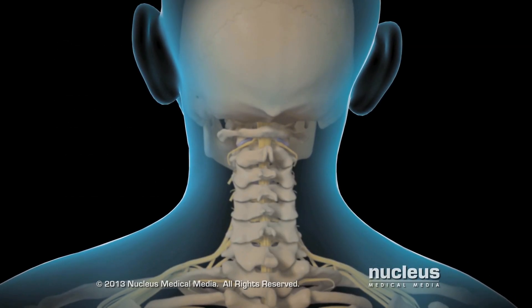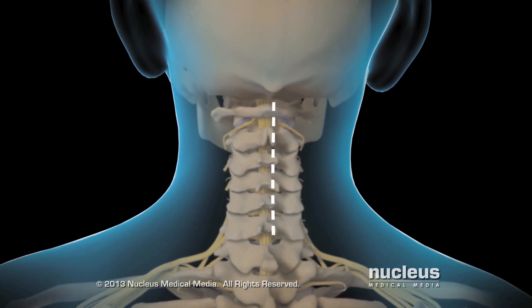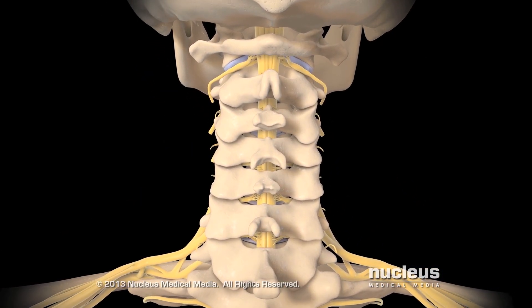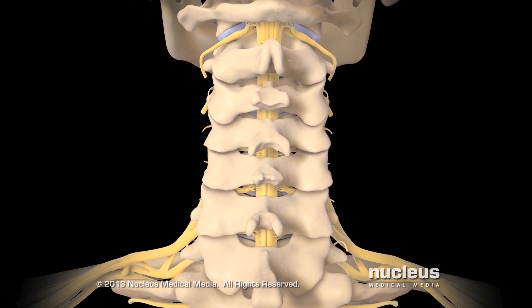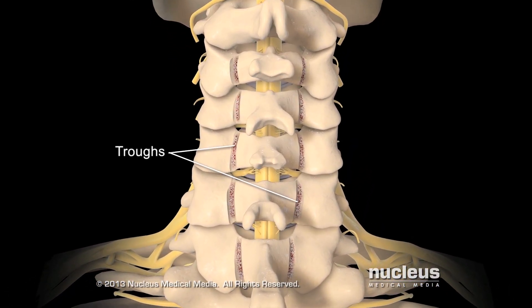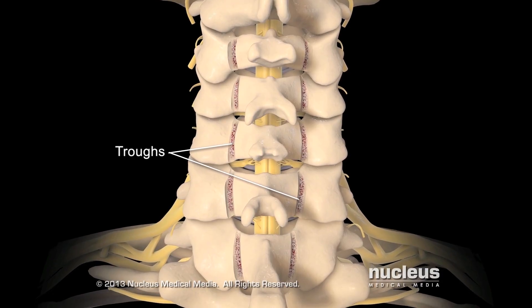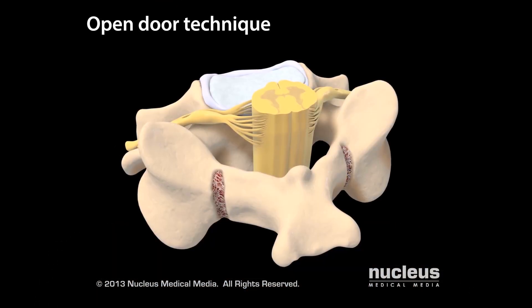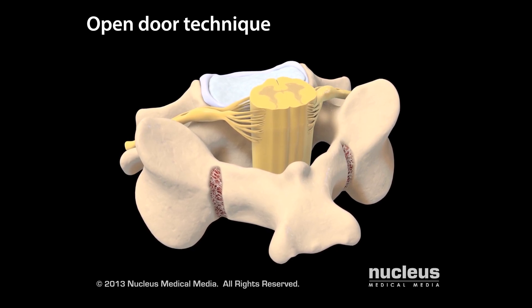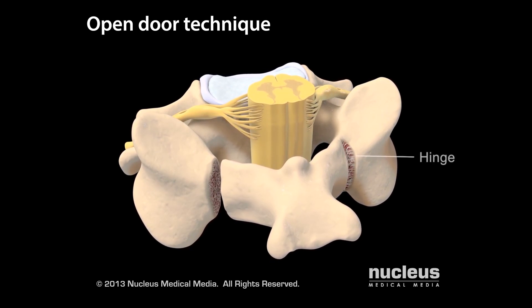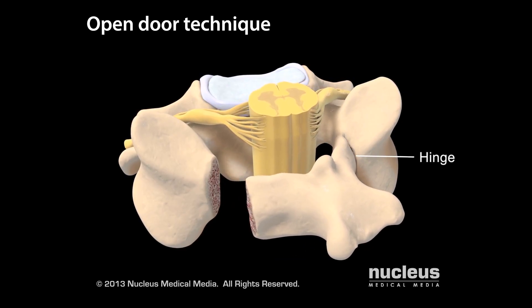Your surgeon will make an incision on the back of your neck. The laminae of the affected vertebrae will be exposed. Your surgeon will remove the outer layer of bone from each lamina, forming two troughs. If your surgeon uses the open door technique, he or she will cut the rest of the way through one of the troughs and pull open the vertebral arch, using the other trough as a hinge.